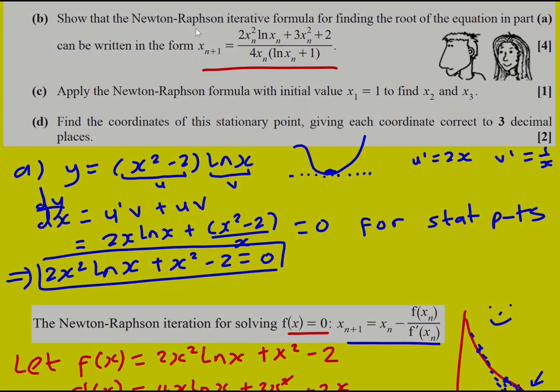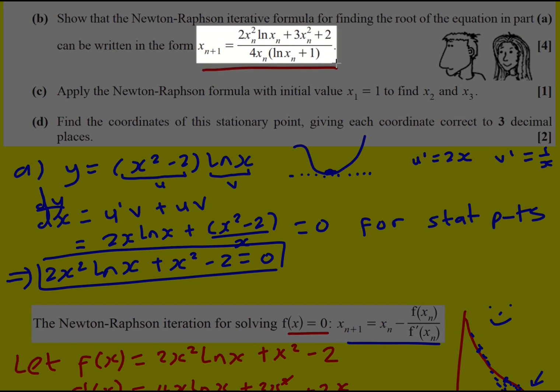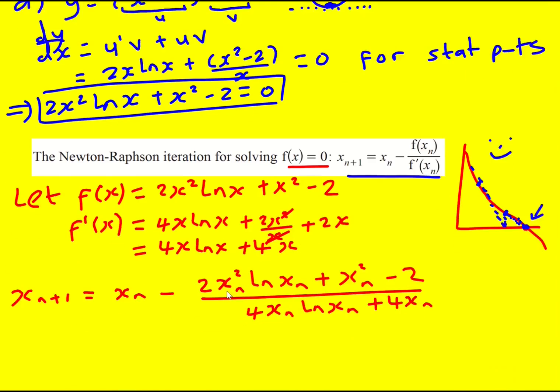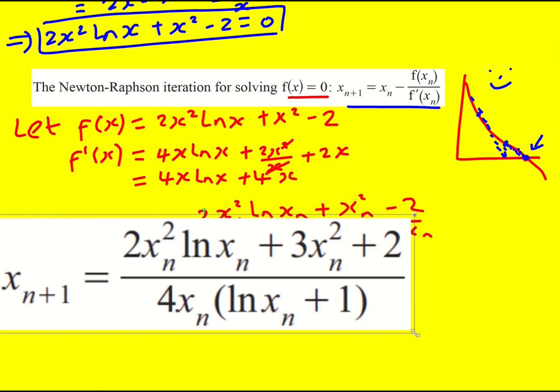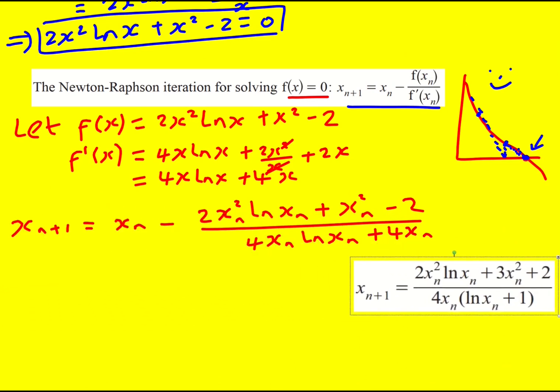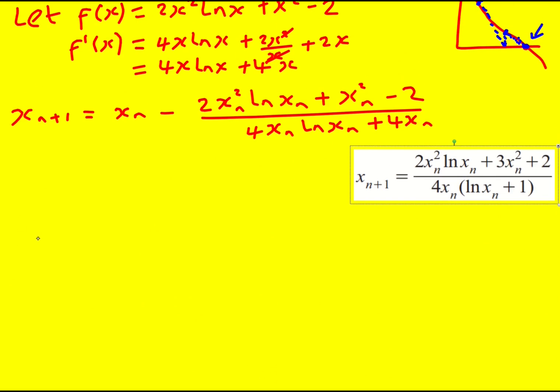So that means x_n+1 is going to equal x_n minus, now I've got my function, I'm just going to write it down, and then it's this bit that is all over the derivative. I'm trying to get to this. I'm not going to focus too much on the answer, but one thing we see immediately is that there is no x_n minus, which means we need to put it over a common denominator.